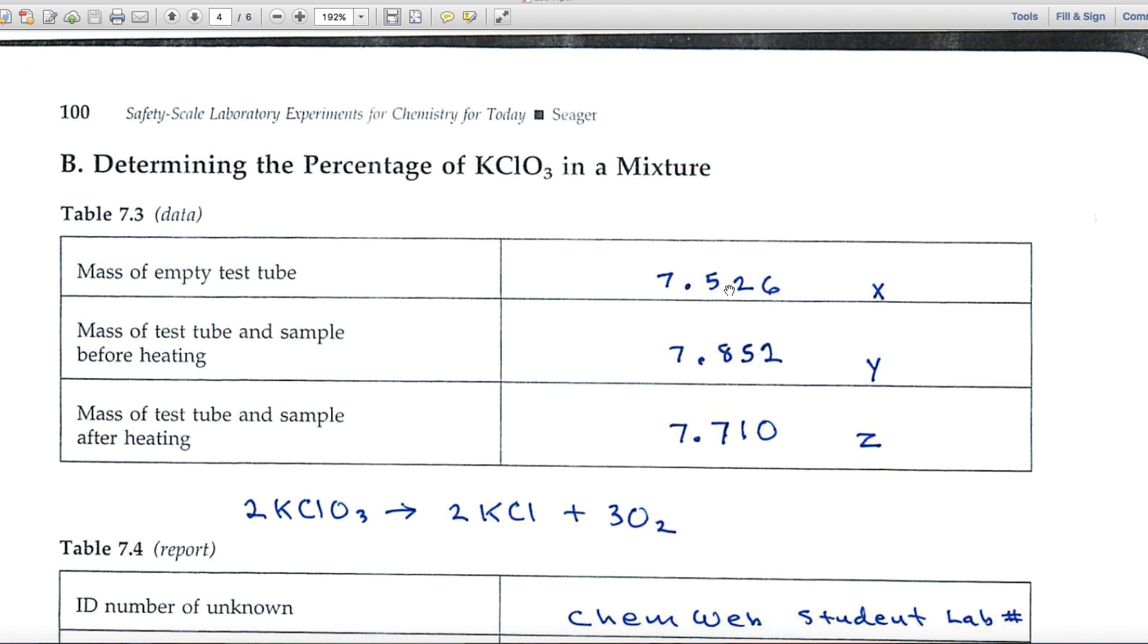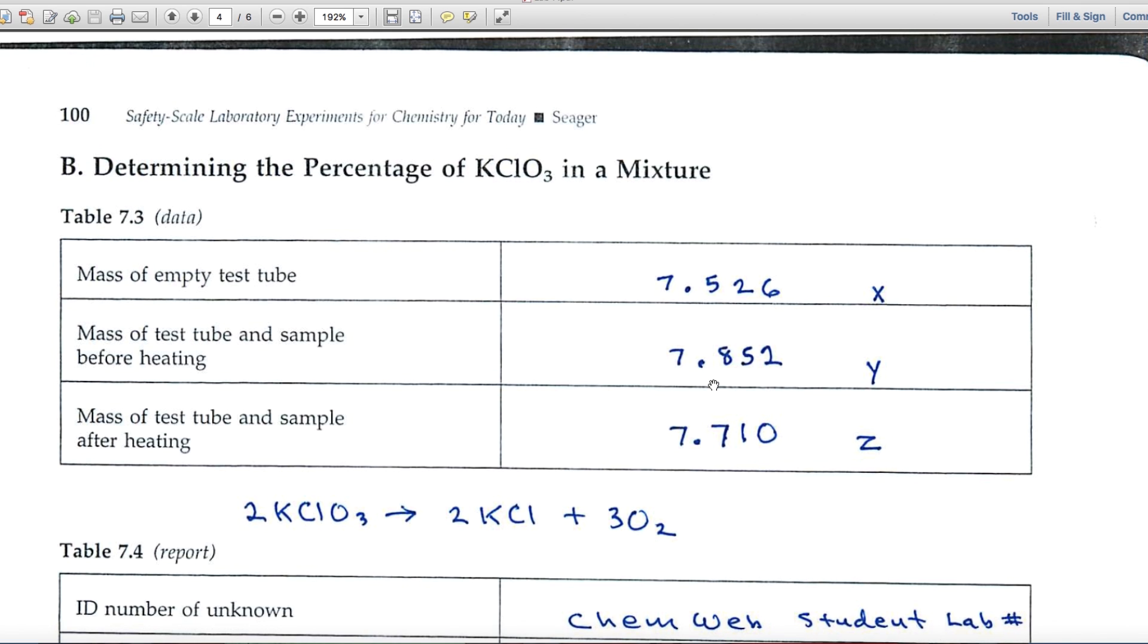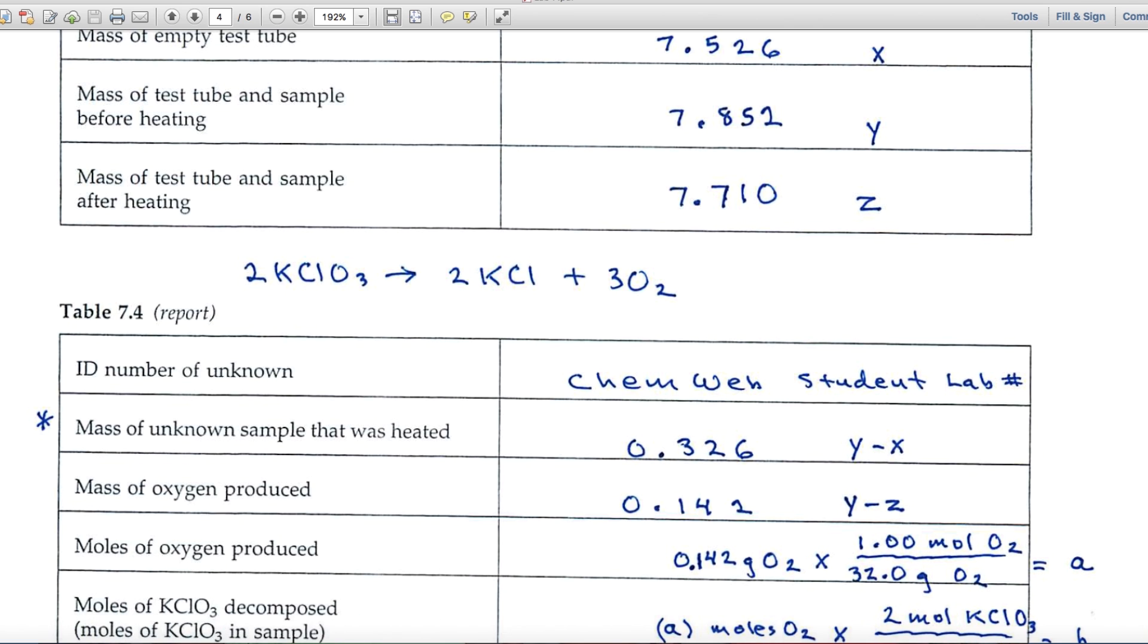Up above, we'll want to record weights to the thousandth. Here's some arbitrary numbers. I'll label this one X. The mass of the test tube and sample before heating is here. The mass of the test tube and sample after heating is here. We'll use these numbers down below now. The first blank in the reporting table calls for the ID of the unknown. Remember, when you enter ChemWeb, that's the student lab number, a four-digit number given to you each time. The mass of the unknown sample that was heated is Y minus X. We'll record that to the thousandth. Mass of oxygen produced is Y minus Z, again to the thousandth, three significant figures.